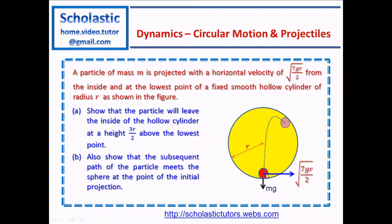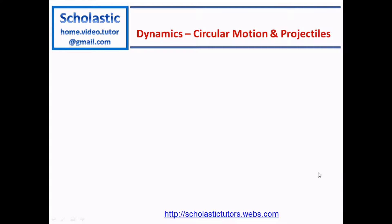That means when you project this particle it will go up and leave the cylinder at a height 3r/2 above the lowest point. We need to neglect the radius of the particle. Also show that the subsequent path of the particle meets the sphere at the point of the initial projection — so it will go up and come back down to the same position where it was projected. Let's see how we are going to solve this problem.